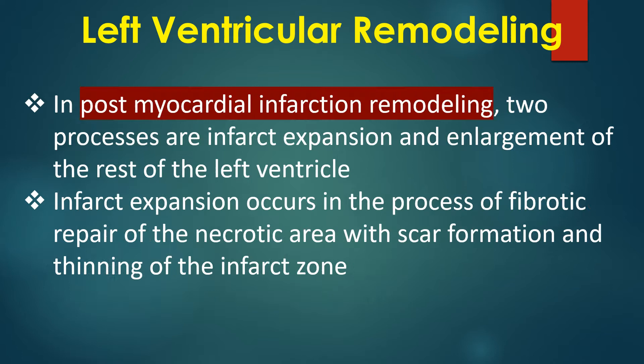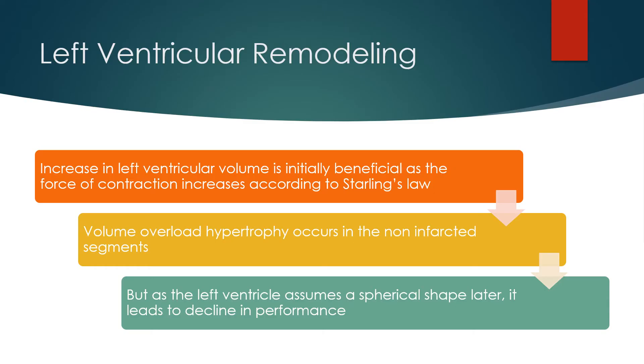In post-myocardial infarction remodeling, two processes are infarct expansion and enlargement of the rest of the left ventricle. Infarct expansion occurs in the process of fibrotic repair of the necrotic area, with scar formation and thinning of the infarct zone. Increase in left ventricular volume is initially beneficial, as the force of contraction increases according to Starling's law.